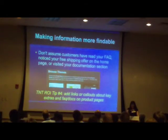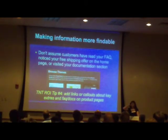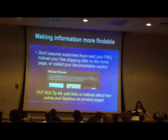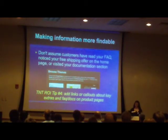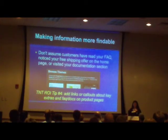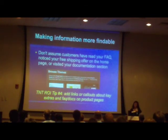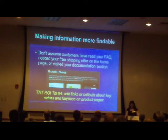Making information findable is also really important. Most people aren't coming to your site through the classic path of home page → section → category. They're jumping around — they came in through a search result directly to a detail page and now they have no idea what you're talking about. Eye tracking data shows this kind of scattered behavior, so you need to accommodate visitors who land anywhere on your site.